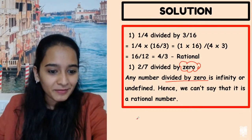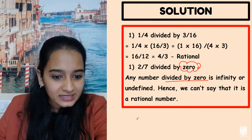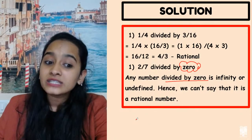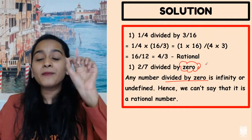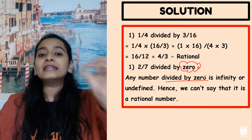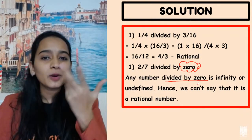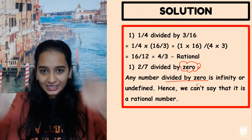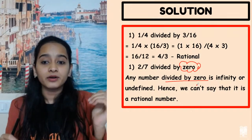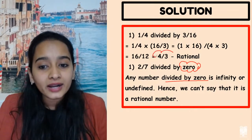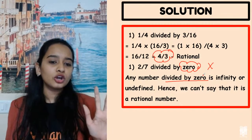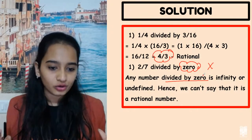Closure property for division will not be closed because when you divide by zero, you are not getting a rational number. The definition of closure property is: you take two rational numbers, perform an operation, and you should get a rational number. In few cases you are getting one, in few cases you are not. There is one case where you're not, so it is not applicable at all.